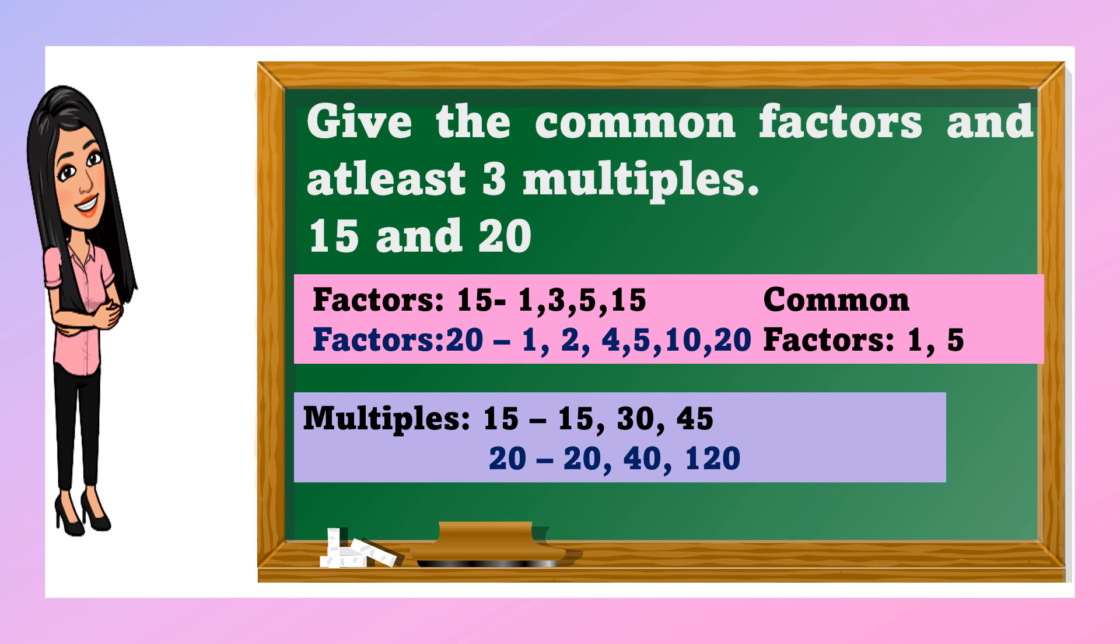Next is the multiples. Again, when we say multiples, you need to get skip counting. So, we have 15, 30, 45. And 20, 20, 40, and 120. So, we are asking about 3 multiples. So, that 3 multiples is 15, 30, 45. For 20, we have 20, 40, and 120.